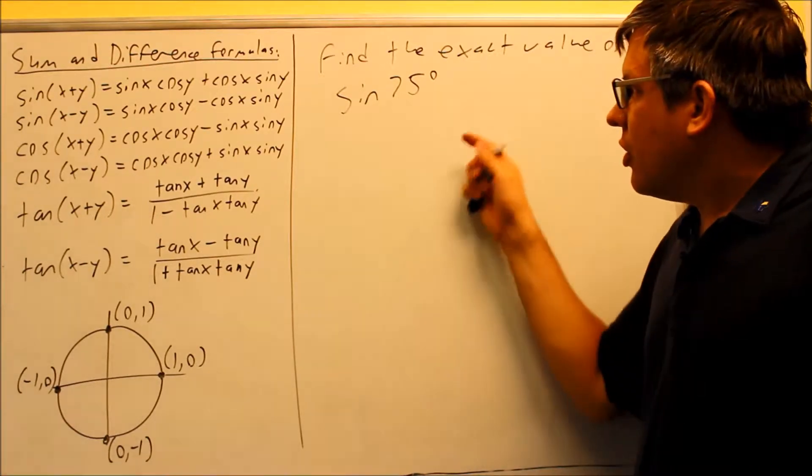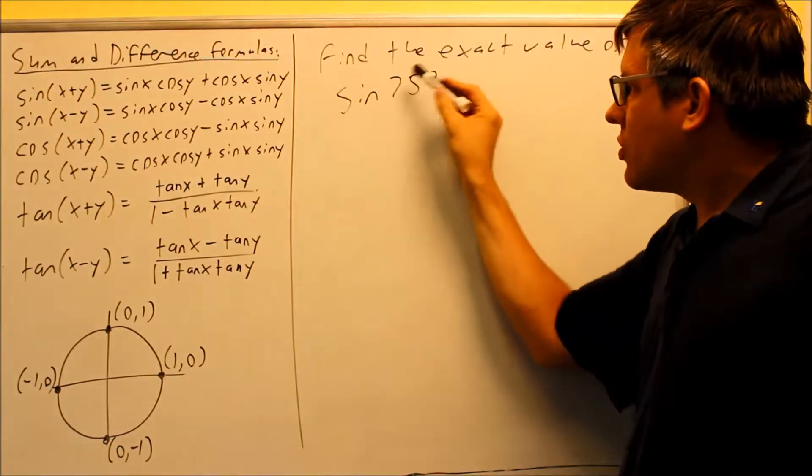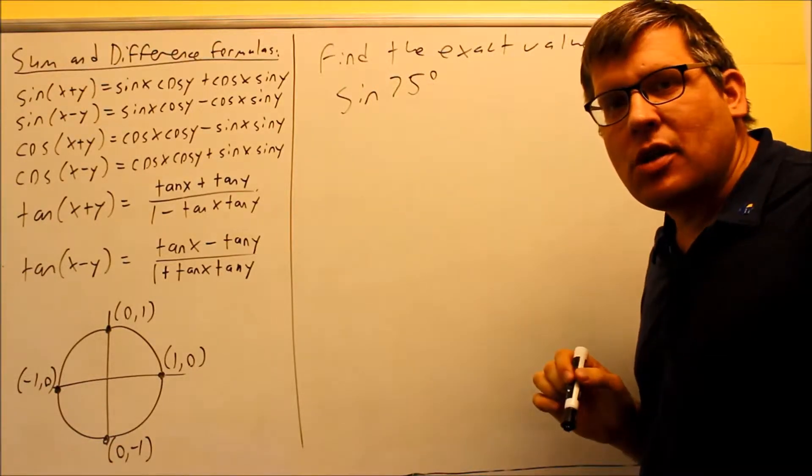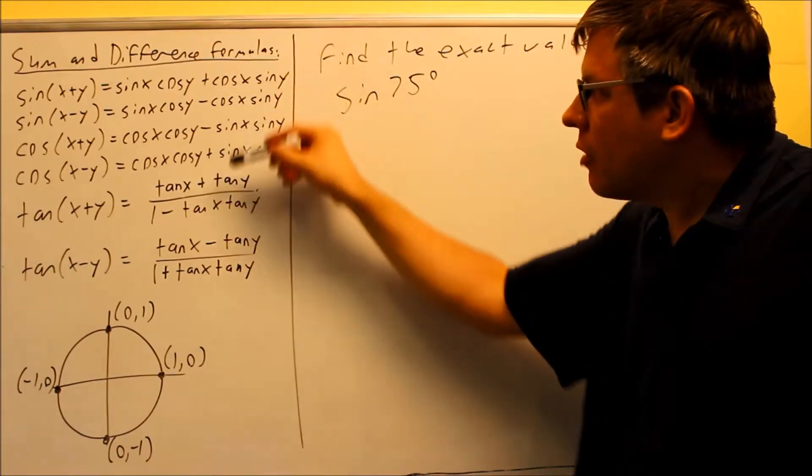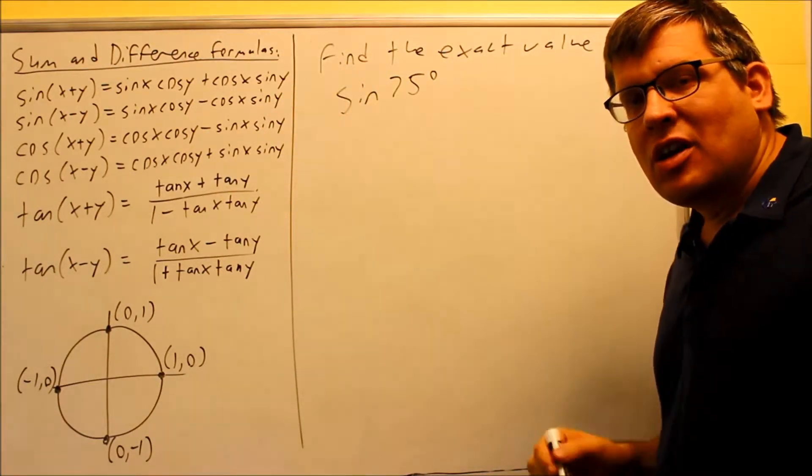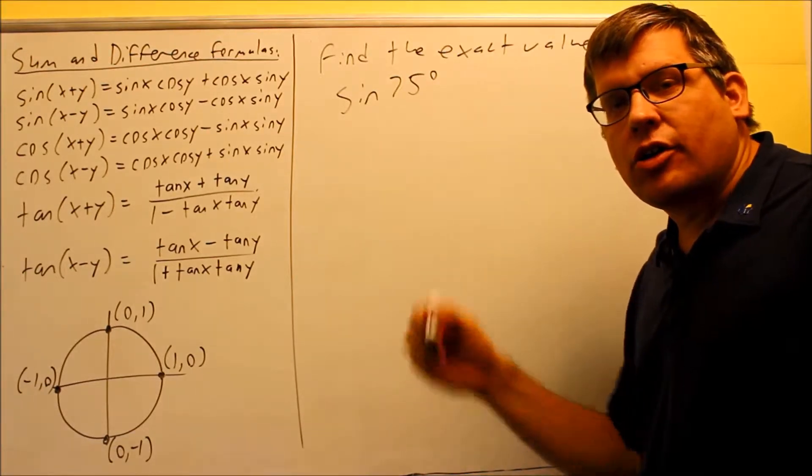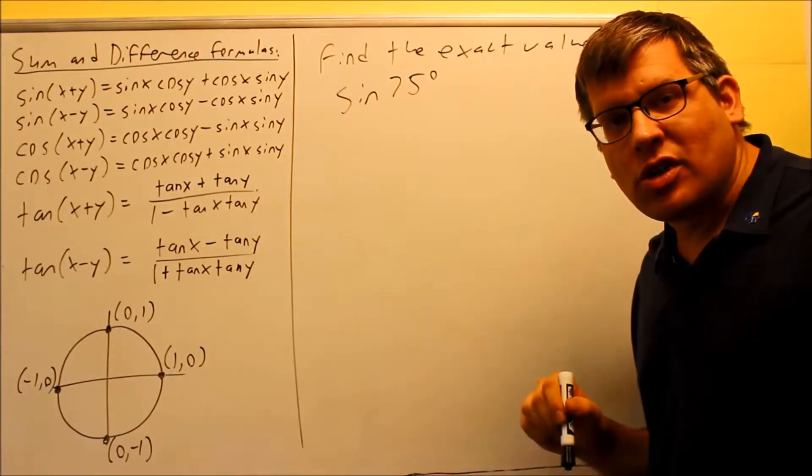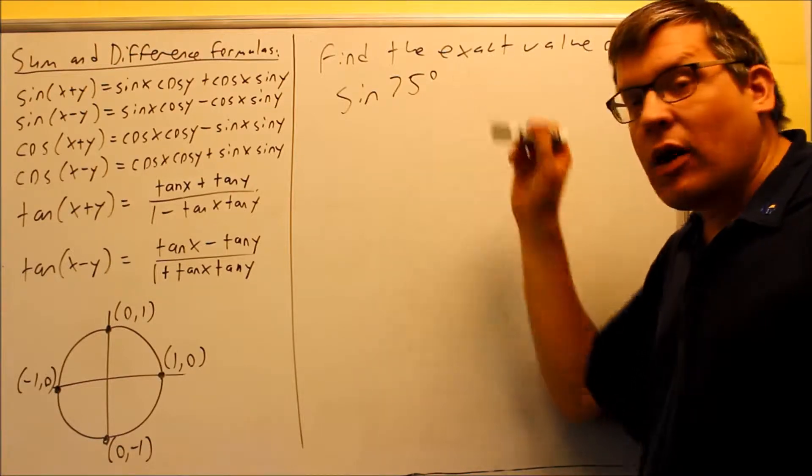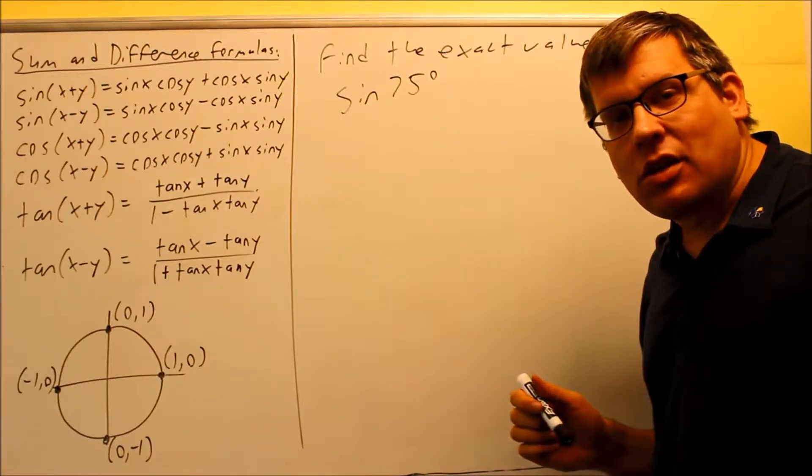What we need to do is create either a sum or difference of two numbers that equal 75, then we can apply one of the sum and difference formulas. The idea is the numbers we pick should be numbers that are on our unit circle or numbers that we can find by using a reference angle. That way it will allow us to put exact values in and get the answer.